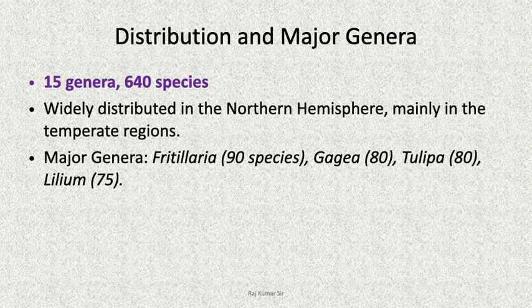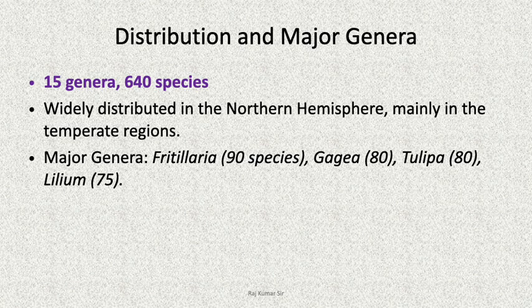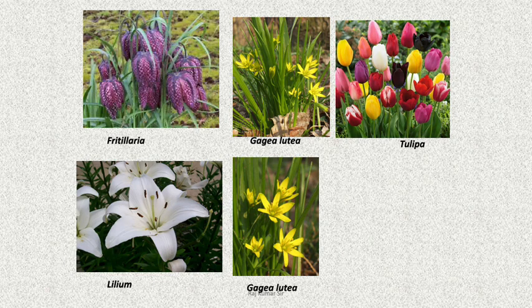Regarding distribution and major genera, there are about 15 genera and 640 species. It is worldwide, widely distributed in the Northern Hemisphere mainly in the temperate regions. Major genera include Fritillaria with 90 species, Gagea with 80 species, Tulipa with 80 species, and Lilium with 75 species.